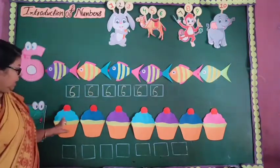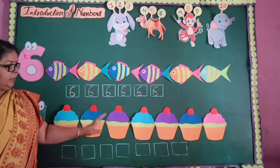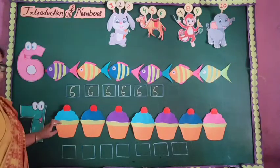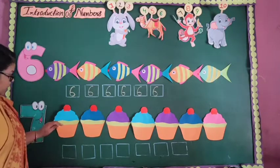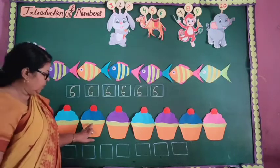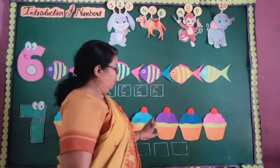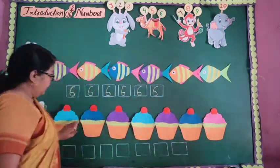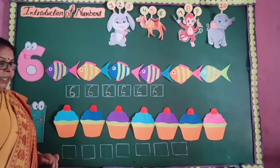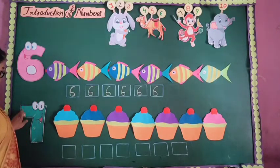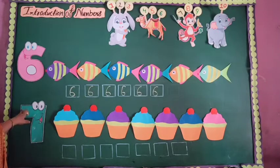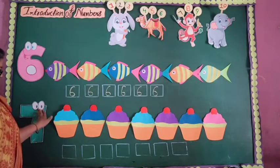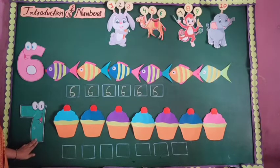Come to the next number. Here are given many cupcakes. So let's count. One, two, three, four, five, six, seven. There are seven cupcakes. Which number is this? Yes, seven. So I trace the numbers here, like this and like this.